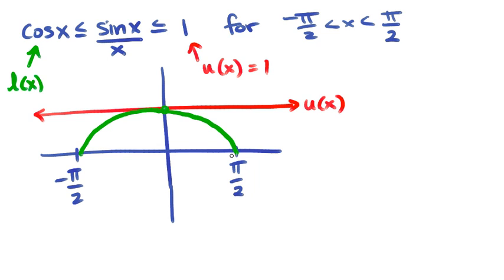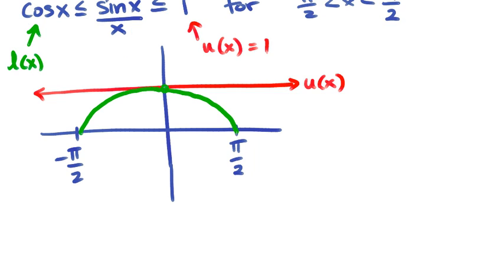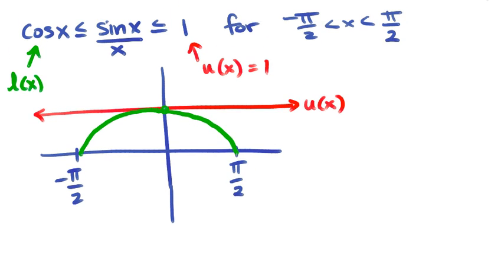The cosine graph looks like this between negative π/2 and π/2, and my sin x over x graph fits in between here.